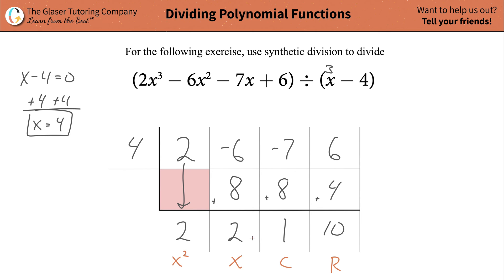So now all you need to do is basically team these up. In other words, your first term in your quotient is going to be 2x squared. The next term is going to be positive, so it's plus 2x. Your next term is going to be plus 1.